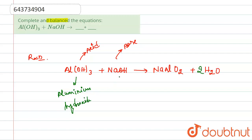aluminium hydroxide plus sodium hydroxide reacts, they form sodium aluminate. So this is sodium aluminate plus water. Basically, this is a neutralization type reaction. Hence, our reaction is balanced. Thank you.